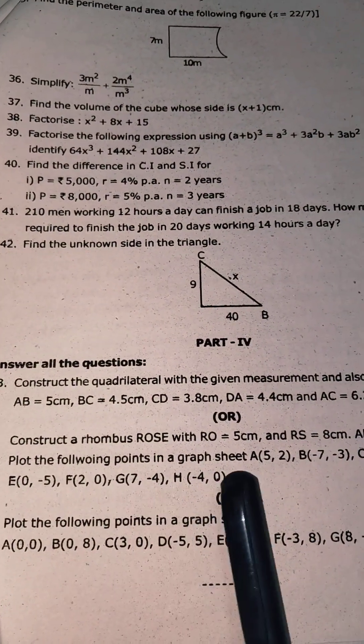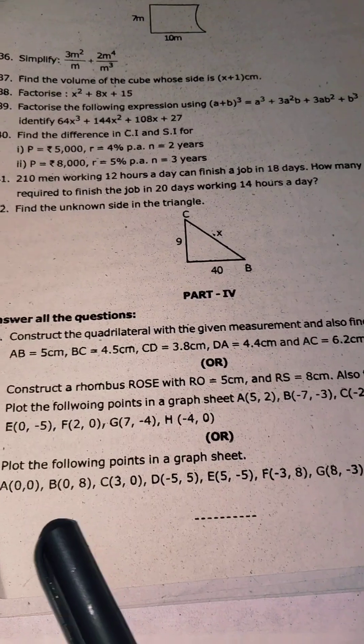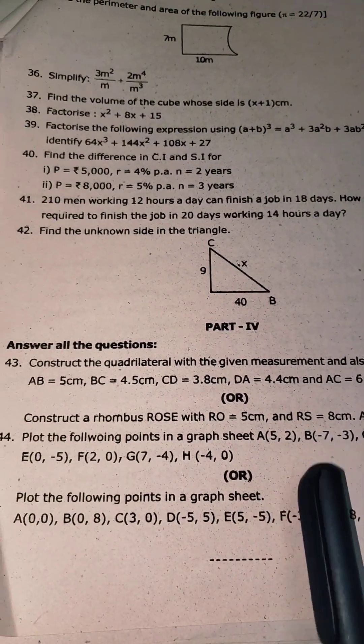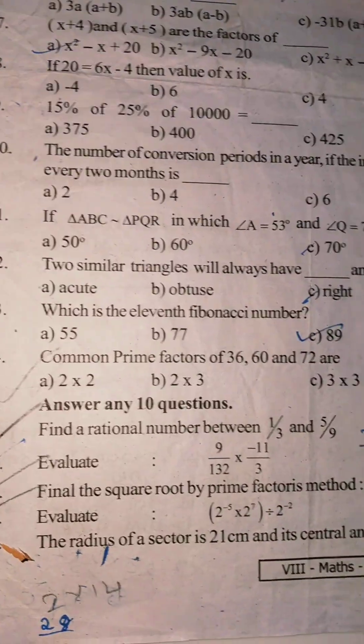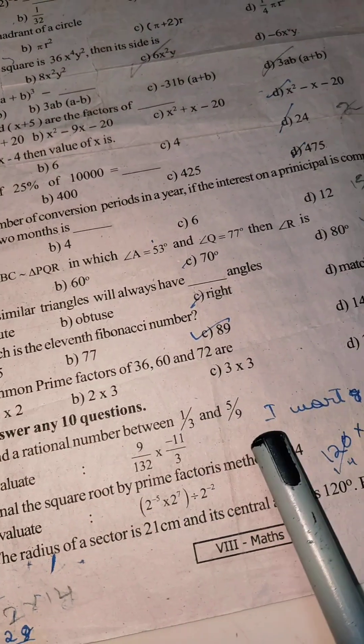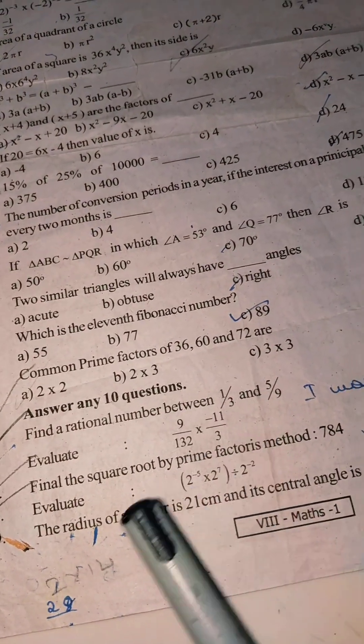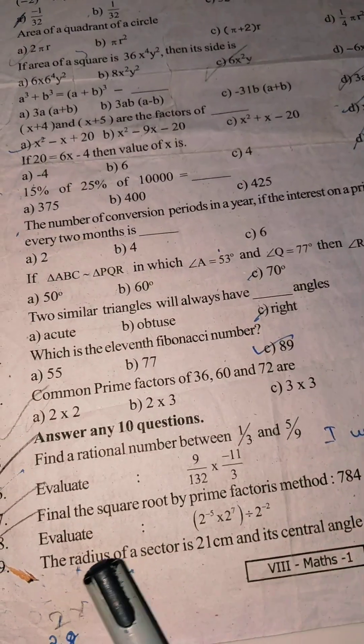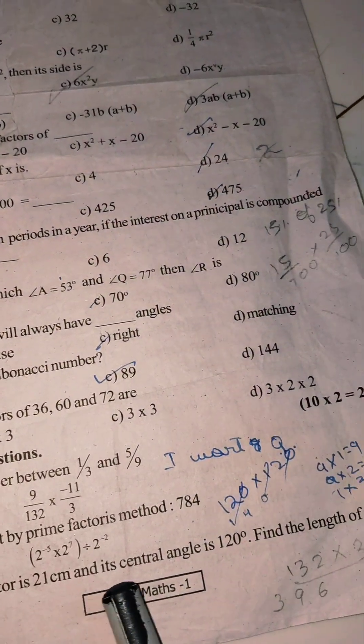Then, plot the following points. Important graph question. If you have a question in the graph sheet, it is easy to find out about this question. Find the rational number between in the question. Evaluate the question. Square prime factorization in the question. The radius of the 21cm, 120 degree, find the length of the area.